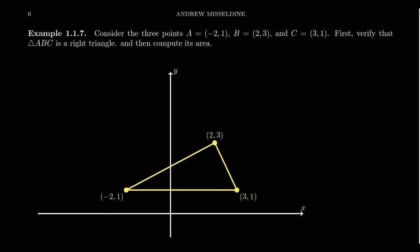Consider the three points illustrated on the screen. Point A, which has the coordinates negative 2 comma positive 1. B, which has the coordinates 2 comma 3. And C, which has the coordinates 3, 1.